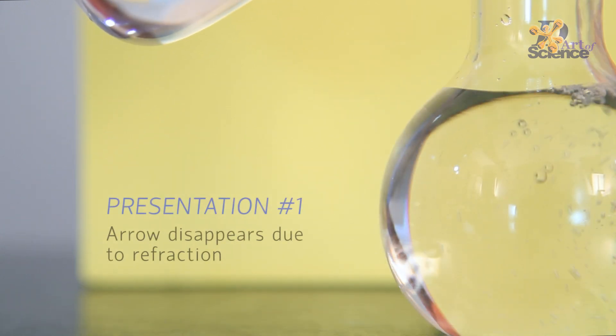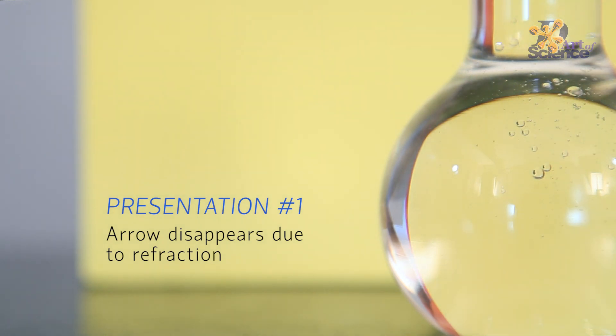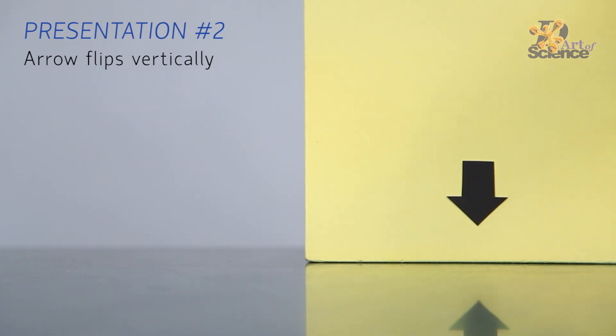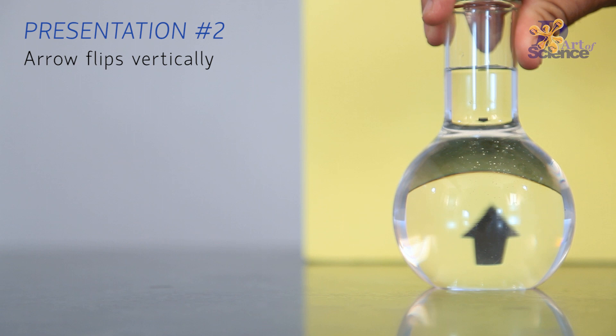When a beam of light travels from air to glass, it bends and changes its direction. This principle is known as refraction. Refraction is the reason why these arrows get flipped.